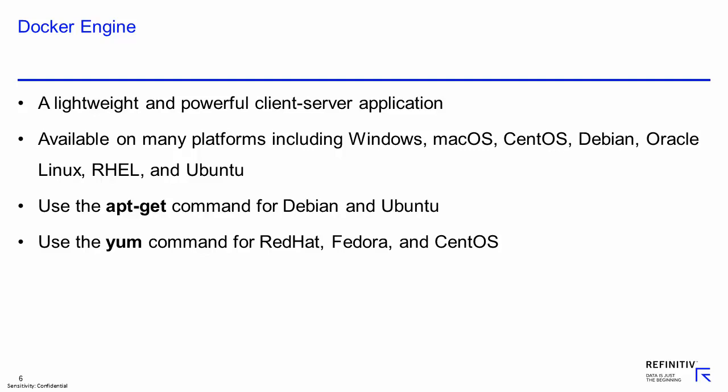It is built on top of the Linux kernel, extensively leveraging its features. Docker engine runs as a service on the machine and provides Docker commands to control and manage the Docker engine, Docker images, and Docker containers. It is available on many platforms including Windows, Mac OS, CentOS, Debian, Oracle Linux, Red Hat, and Ubuntu. It can be installed using the corresponding packaging tools of the Linux distribution, such as the apt-get command for Debian and Ubuntu, and the yum command for Red Hat, Fedora, and CentOS.